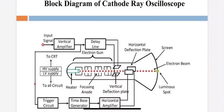Hello everyone, today let us study the block diagram of CRO. The major blocks in CRO are: first, the cathode ray tube; second, the horizontal deflection system, which consists of a trigger circuit, time-base generator, and horizontal amplifier; third, the vertical deflection system, which consists of a vertical amplifier and delay line; and finally, the power supply, which consists of high voltage supply and low voltage supply.